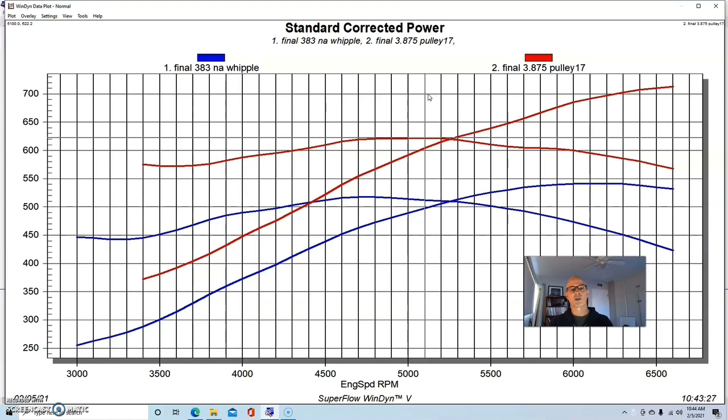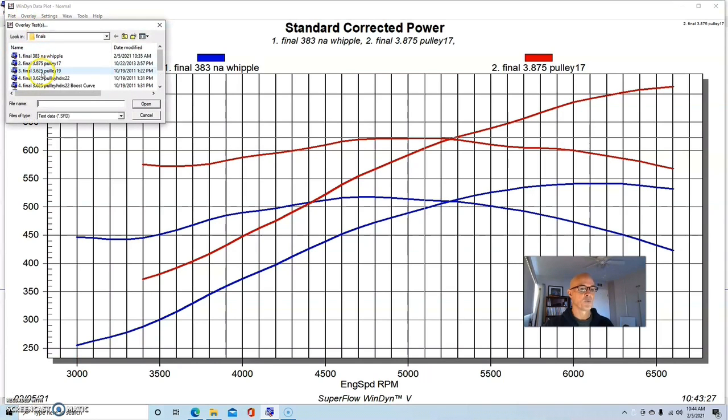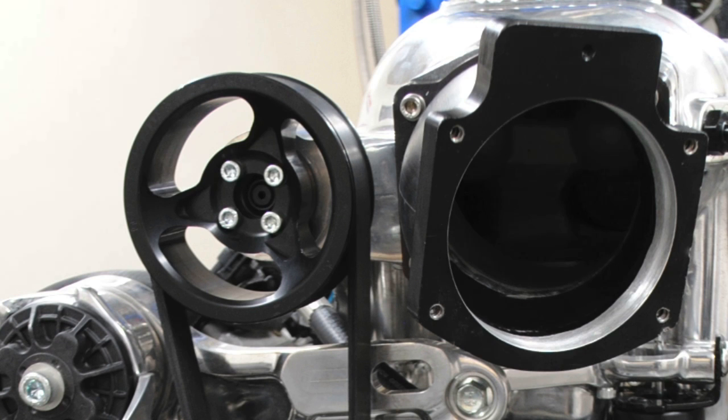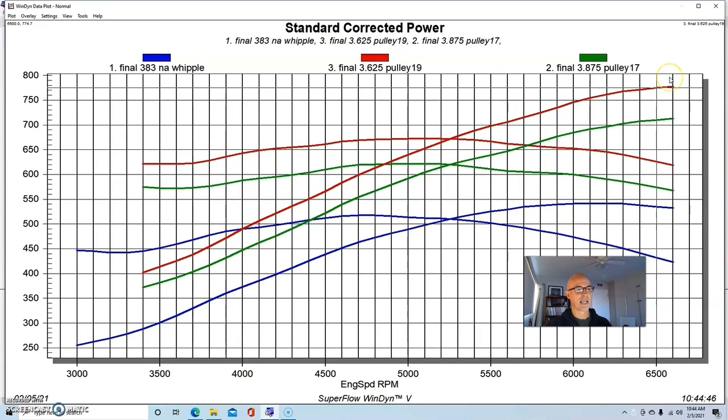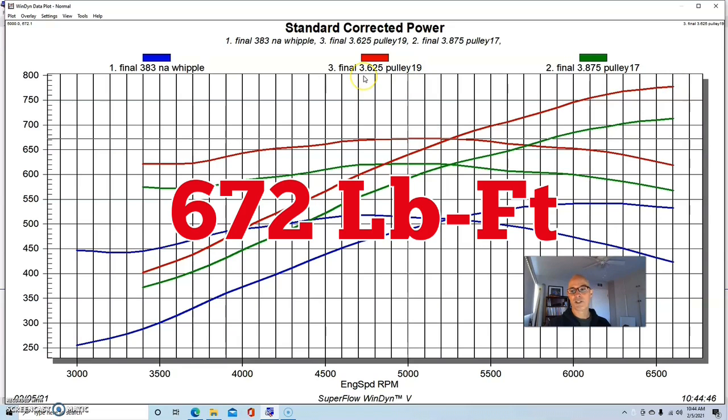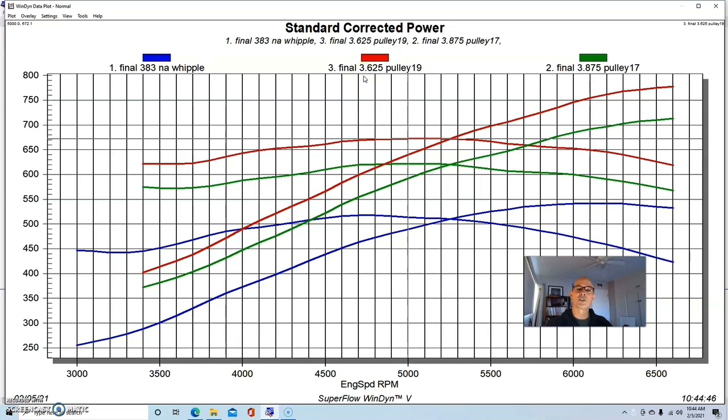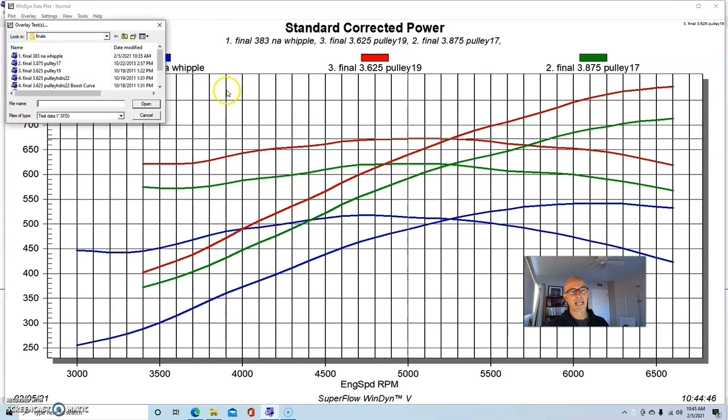Most people think that a positive displacement blower has immediate boost and that the boost curve is fairly flat, but as we'll see that's not the case with this combination. We actually have a rising boost curve and a nice climbing power curve. The first thing we did was change the boost. We put a smaller 3.625 blower pulley on there and we upped the boost to 778 horsepower and 672 foot-pounds. That raised the peak boost pressure to 9.2 pounds.